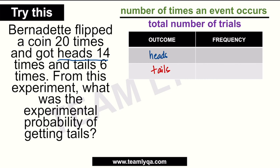Now titignan natin yung frequency. Ang sabi sa tanong, meron daw heads 14 times, so ibig sabihin ang frequency nya ay 14, at ang tails naman ay 6 times, so ang frequency nya ay 6. Now, another important thing na kailangan nating tingnan ay yung total. Yung makukuha natin, i-add lang natin yung 14 at 6 — 14 plus 6 is 20. Nakalagay din sya sa tanong na ito, pero in some questions hindi sya sinasabi. Now that we have yung information na yan at yung total, makukuha na natin yung experimental probability.